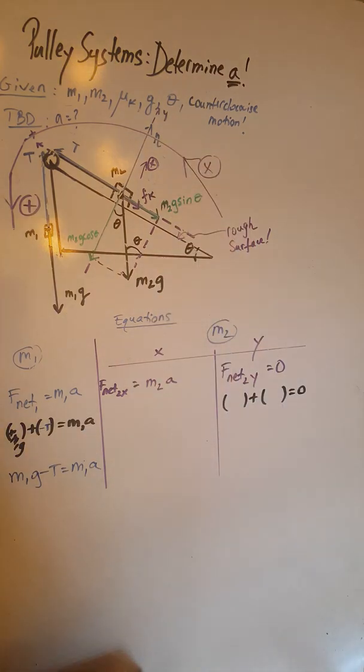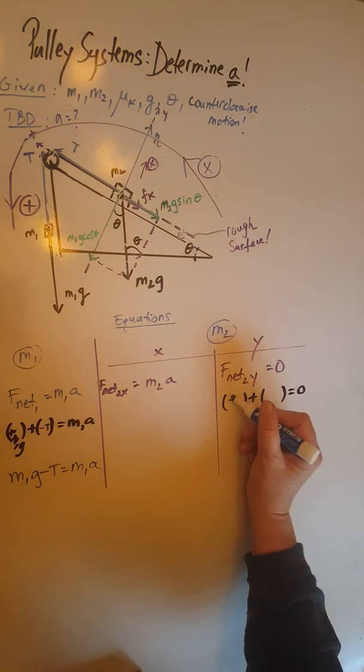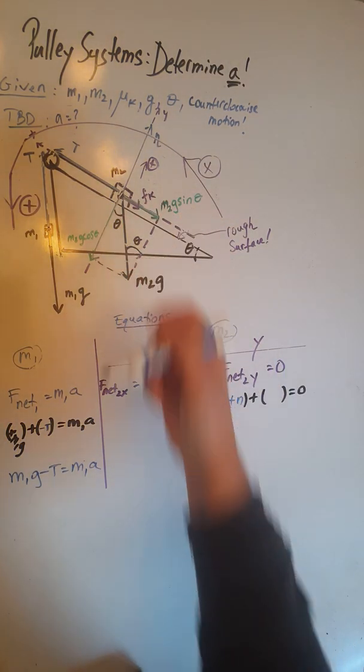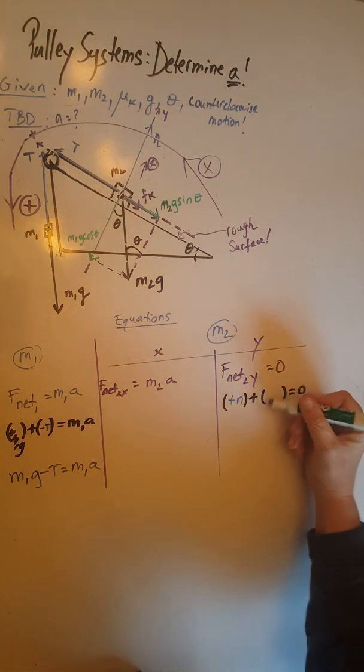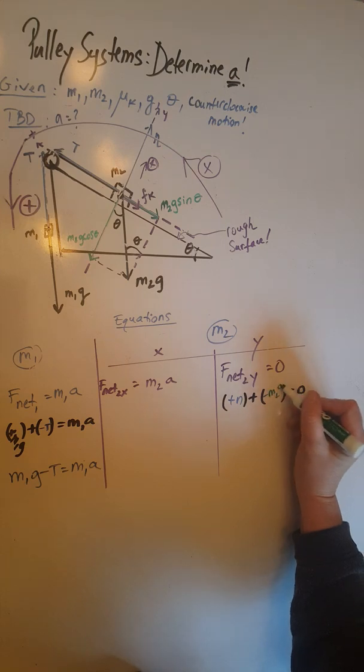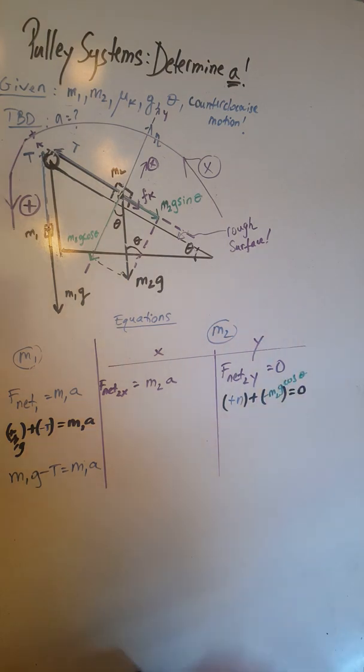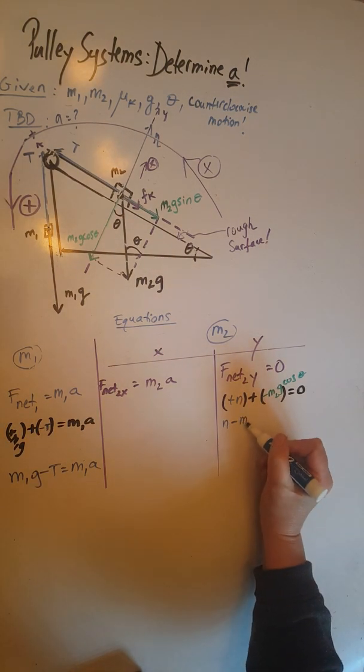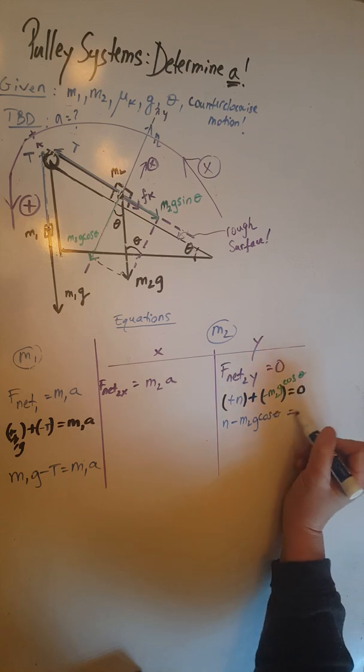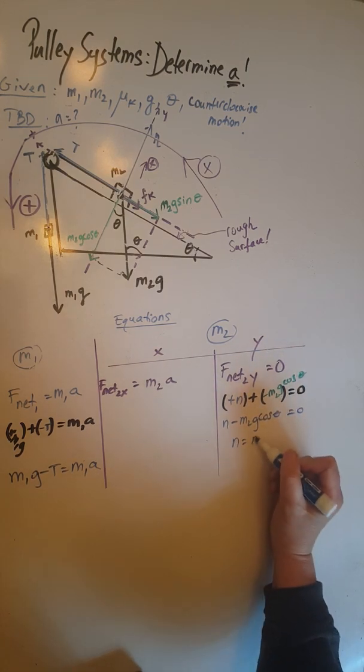And the other one is negative m2g cosine theta. When we simplify this, we end up having N minus m2g cosine theta equals zero, which gives me N equals m2g cosine theta.